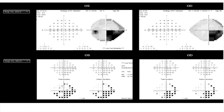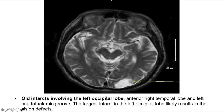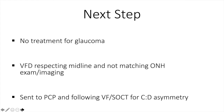On visual field, we see a quadrant defect in the left eye and a quadrant defect in the right eye, and this should automatically make us think of something central in nature rather than true glaucoma. On scan, there is evidence of old infarcts involving the left occipital lobe. The patient was sent to the primary care physician and followed with visual field and OCT for cup-to-disc asymmetry.